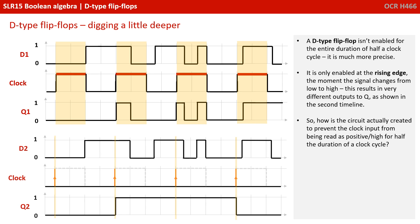A D-type flip-flop isn't enabled for the entire duration of half a clock cycle though. We know it's much more precise. It's only enabled at the rising edge, the very moment the signal changes from low to high. This results in a very different output to Q, as shown in the second timeline.